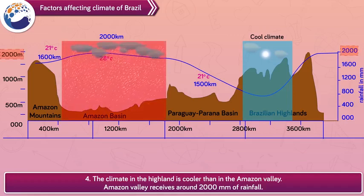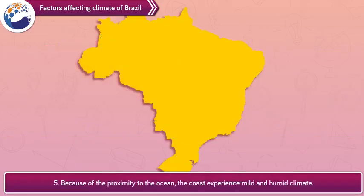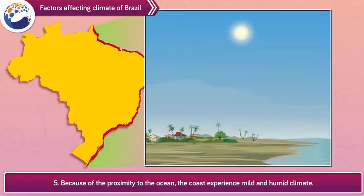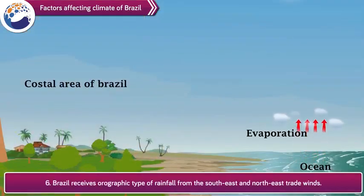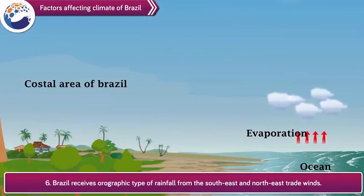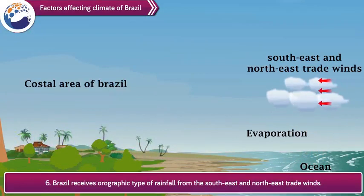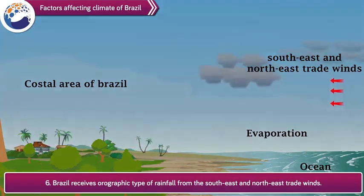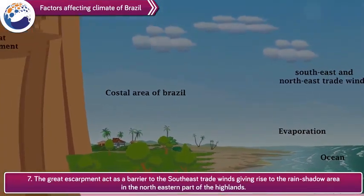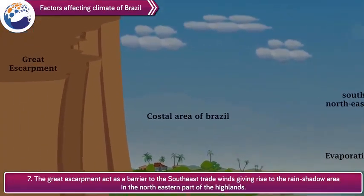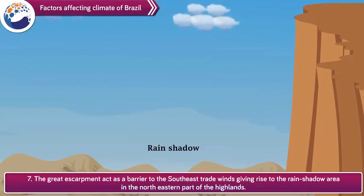The Amazon Valley receives around 2,000 mm of rainfall. Factor 5: Because of the proximity to the ocean, the coast experiences a mild and humid climate. Factor 6: Brazil receives orographic type of rainfall from the southeast and northeast trade winds. Factor 7: The great escarpment acts as a barrier to the southeast trade winds, giving rise to the rain shadow area in the northeastern part of the highlands.